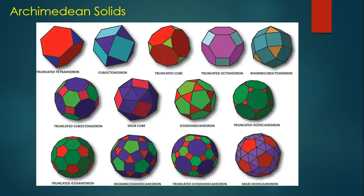There's one other type of solid to mention: Archimedean solids. What you'll notice about all of these Archimedean solids is that the faces are still made up of regular polygons, but the solid is made up of more than one type of regular polygon. For example, the truncated cube has faces that are regular octagons and regular triangles. There are only 13 types of Archimedean solids, and we could look at nets and vertex nets for these solids.